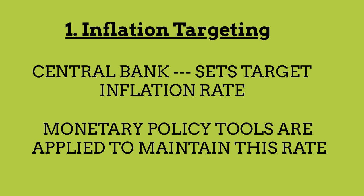The first is inflation targeting. It involves setting a specific numerical target for the inflation rate, such as 2%. The central bank then adjusts its monetary policy to try to keep actual inflation close to the target. If inflation exceeds the target, the central bank may raise interest rates or take other contractionary measures to cool down the economy and bring inflation back within the target range. Conversely, if inflation falls below the target, the central bank may lower interest rates or implement expansionary policies to stimulate economic activity and increase inflation.